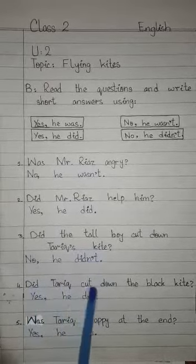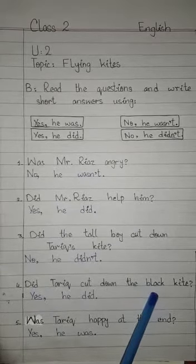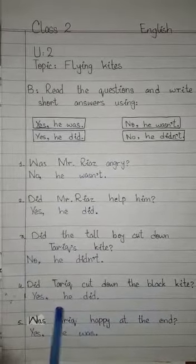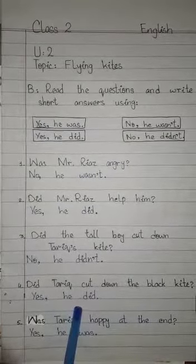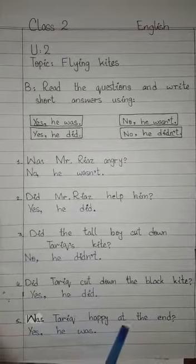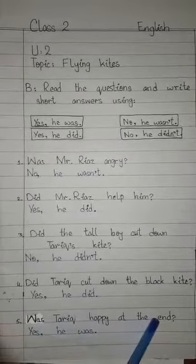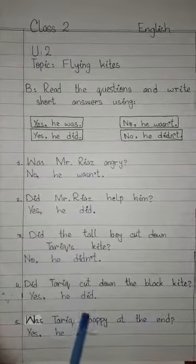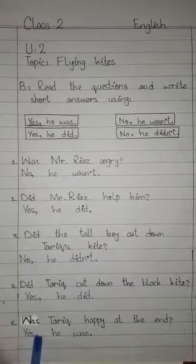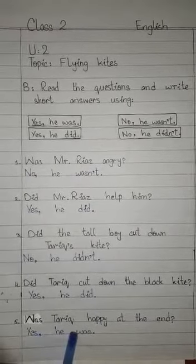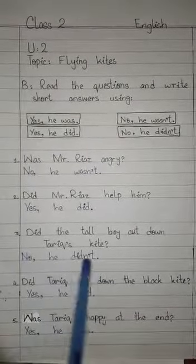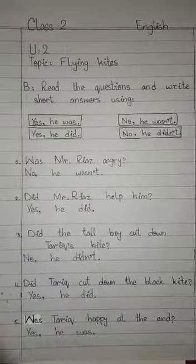Number 4. Did Tariq cut down the black kite? Yes, he did. Number 5. Was Tariq happy at the end? Yes, he was. Thank you.